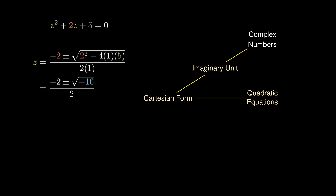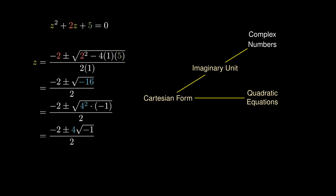Working with complex numbers, we can write -16 as 4²×(-1). This allows us to pull out the 4 using usual root properties, and the square root of -1 is simply i. Doing a little more algebra, z must equal -1 ± 2i.